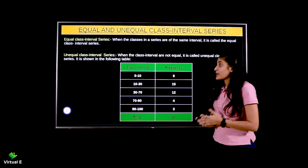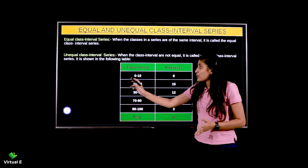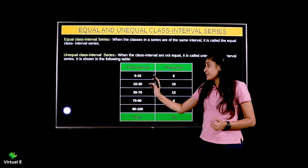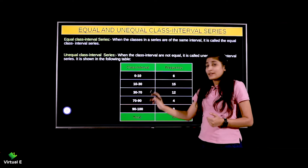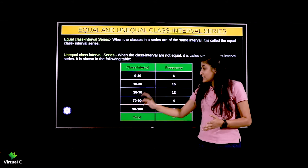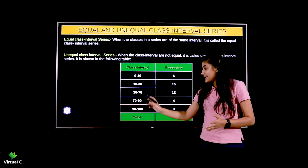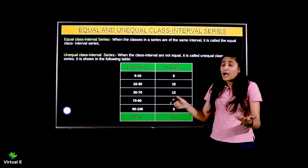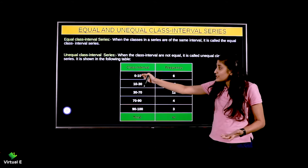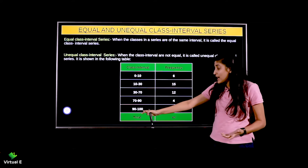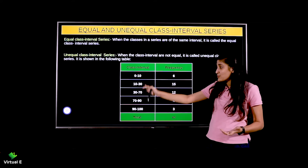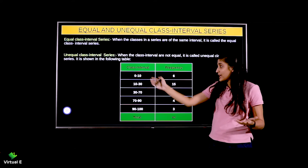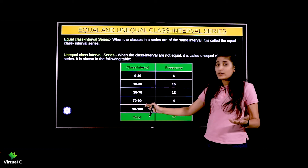Example mein kya diya hua hai? 0 to 10, 10 to 30, 30 to 70, 70 to 90, and 90 to 100. Here the first class and the last class may be equal, but in between everything is unequal. It is not necessary that they be equal throughout.